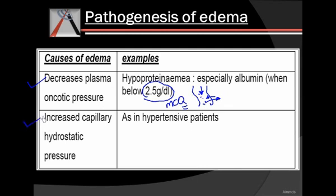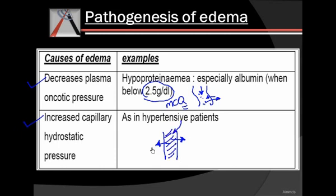Then we have increased capillary hydrostatic pressure. The hydrostatic pressure drives fluid out of the capillary, so if the pressure increases inside the blood vessel — as seen in hypertensive cases — it will drive the fluid out. That is why we see edema in hypertension.